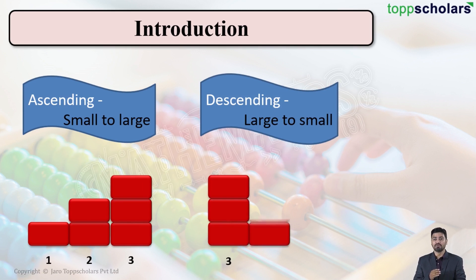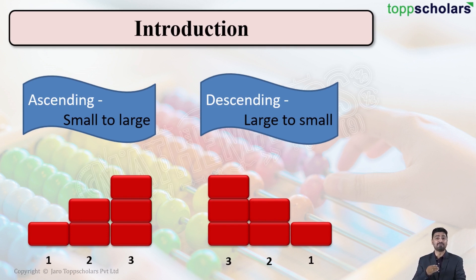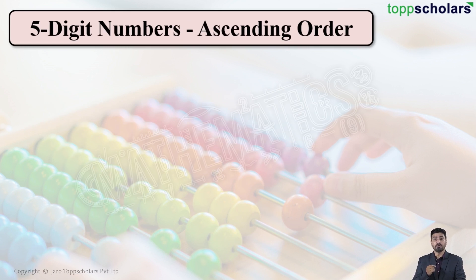So in descending order we have three first, then comes two, and then comes one. Ascending means we go from the smaller number to the larger number, and descending means from the larger number we come slowly down to the smaller number.